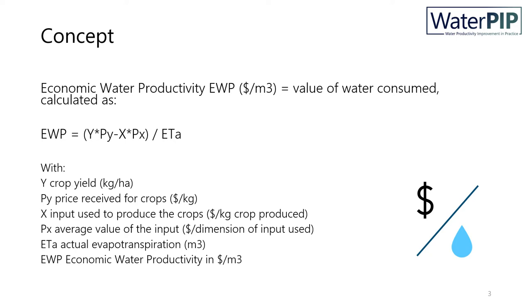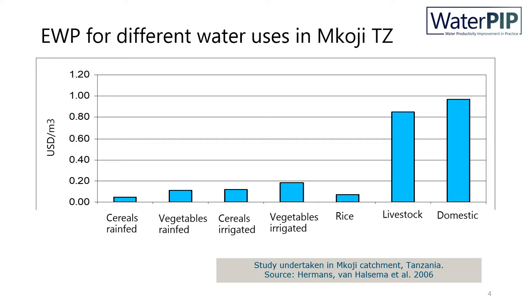Let us look at a particular watershed in Tanzania, the Minkoji watershed that drains into the Rufiji river basin. You can see that typically economic water productivity increases from rain-fed to irrigation, as yields increase against small increases in evapotranspiration; from staple to vegetables, as commercial prices for vegetables are generally higher; and from livestock to domestic use, as water for human survival is valued higher. Note that livestock figures did not include the evapotranspiration of fodder — otherwise, economic water productivity would have been much lower, as the ET term in the equation would have been much higher.